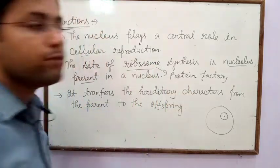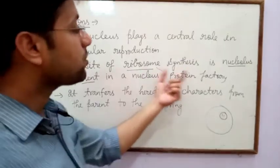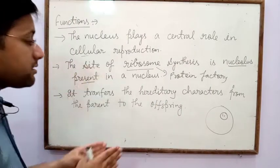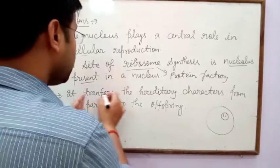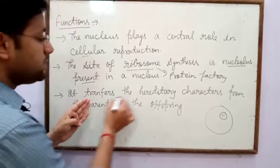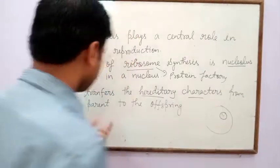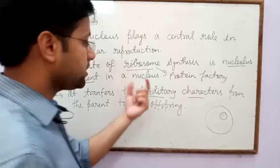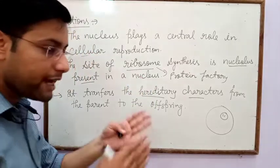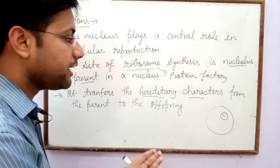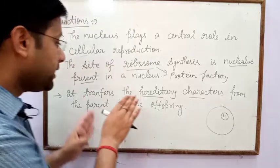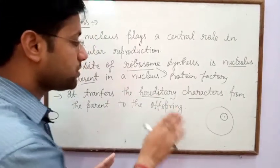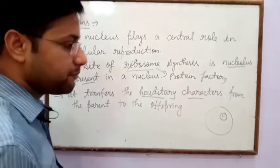Ribosome helps in protein synthesis and is called the protein factory. The nucleus transfers hereditary characters from parents to offspring — all parental characters, especially hereditary characters, are transmitted through the nucleus from parents to offspring.